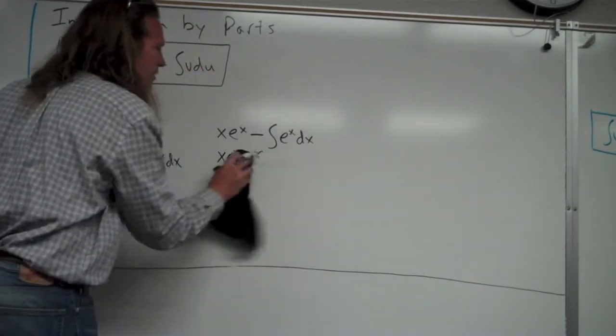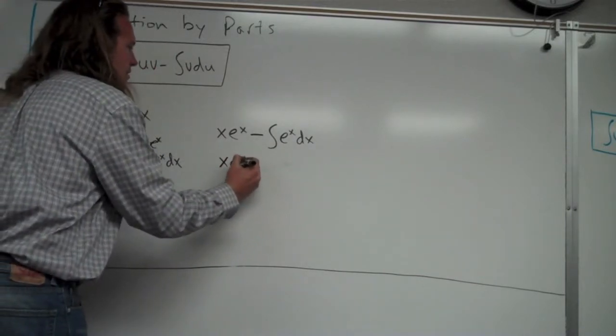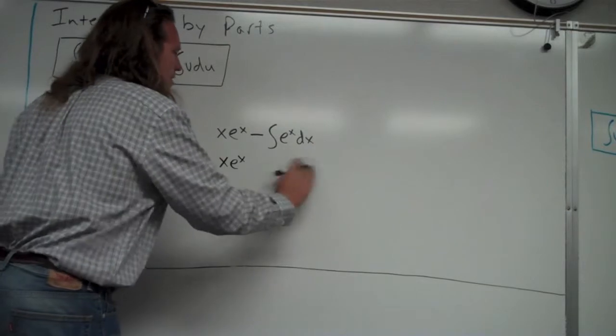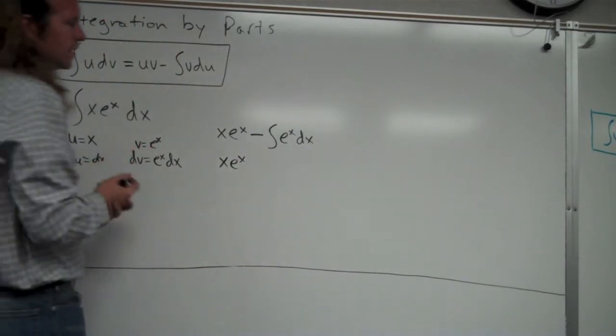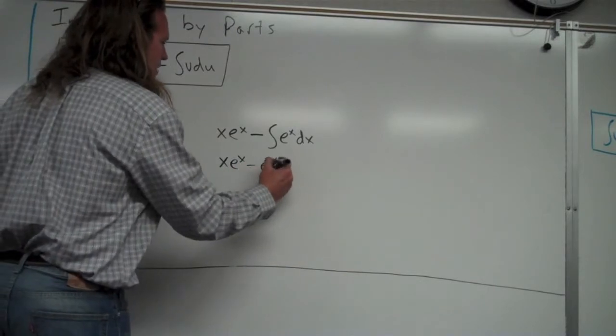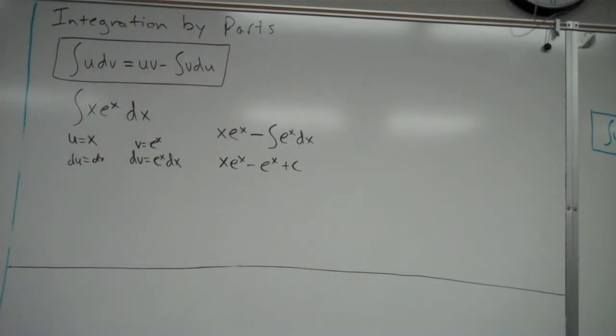And I'm going to go ahead and do x e to the x, minus the integral of e to the x dx. This x e to the x is going to stay there. It's going to remain the same. And now we just do the integral of e to the x. So the integral of e to the x is just e to the x. So it's minus e to the x plus c. So the anti-derivative of x e to the x is x e to the x minus e to the x plus c.